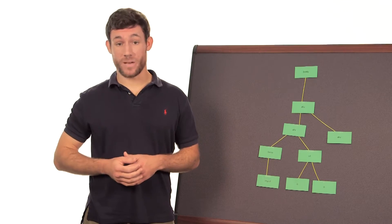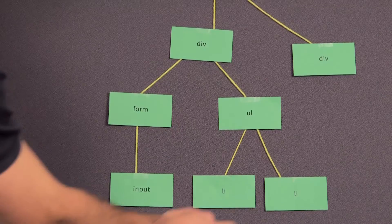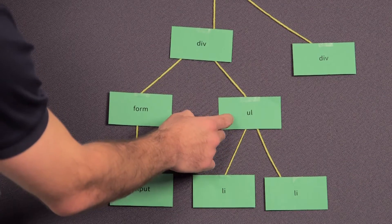Elements at the same level are siblings, like these two list elements, or this unordered list and this form.